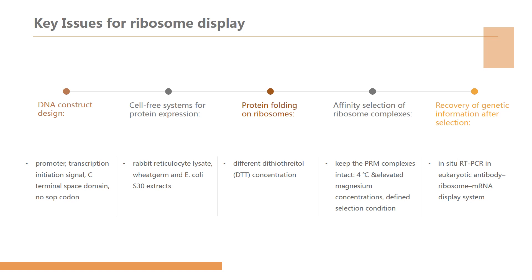Regarding cell-free systems for protein expression, the choice is generally based on the origin of the proteins to be displayed. Rabbit reticulocyte lysate, wheat germ, and E. coli S30 extracts have been successfully used for ribosome display of peptides, antibodies, and other proteins. There is evidence that nascent proteins, either in vivo or in a cell-free system, fold cotranslationally on ribosomes. The coupled rabbit reticulocyte lysate system contains 2 mM DTT, and different antibodies may have various folding stabilities that could be affected by DTT concentration, particularly through possible reduction of intra-chain disulfide bridges.